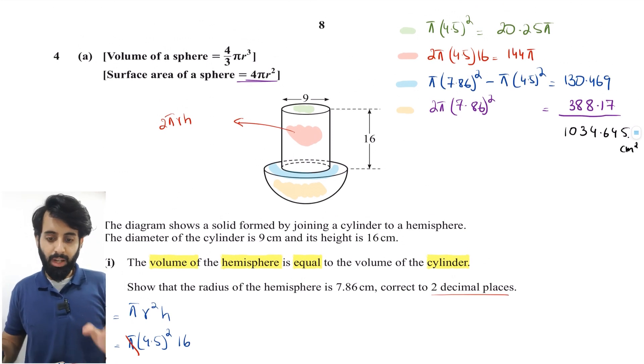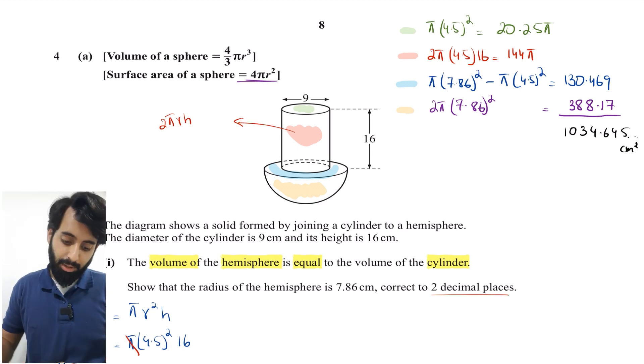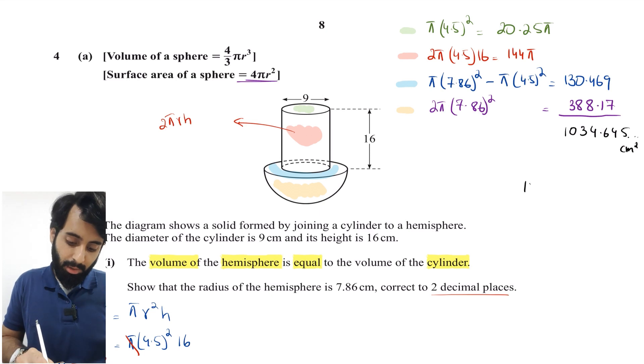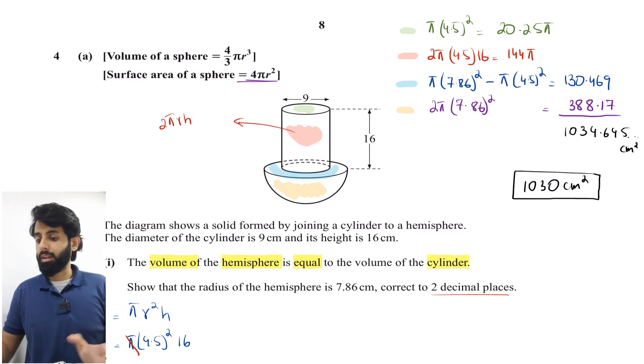This doesn't qualify for a final answer because we have a standard rule to round off correct to three significant figures. This is between 1030 and 1040. Since it's 1034.something, it's closer to 1030. So I'm going to lock this at 1030 cm² - this is my final answer.